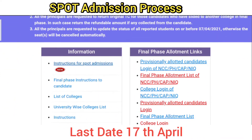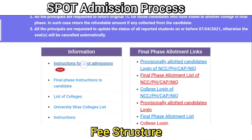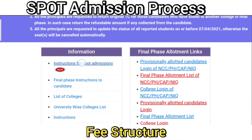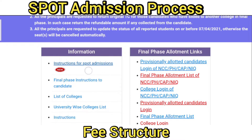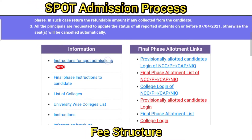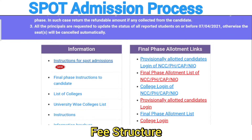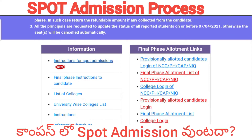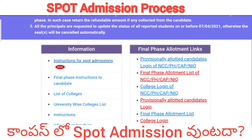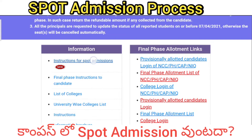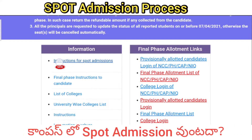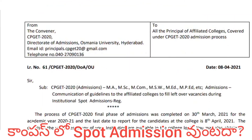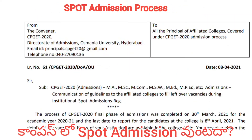Let's get the instructions on the official website. We will get the dates and the opportunity in this college. We will get the information and instructions from the description. You can click the link and download the instructions. Here is the spot admission official notification.